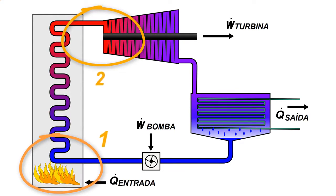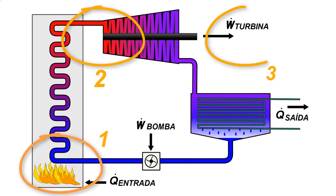The third step is the transformation of mechanical energy into electrical energy through a generator. So the steam turbine is an energy converter.